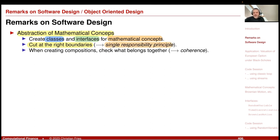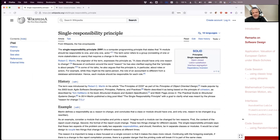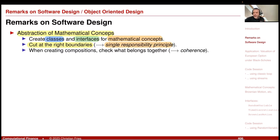This is related to the single responsibility principle. You can look it up on Wikipedia. It states: a class should have only one reason to change. In our application, for example, you might have a component responsible for generating random numbers and the inversion of the distribution function. The class should be responsible for a single part.